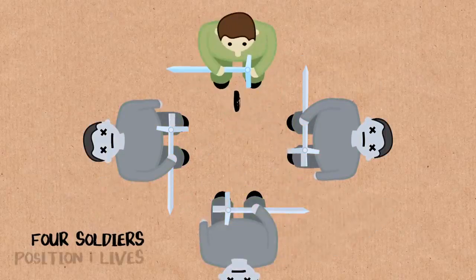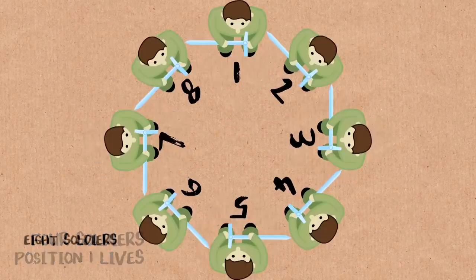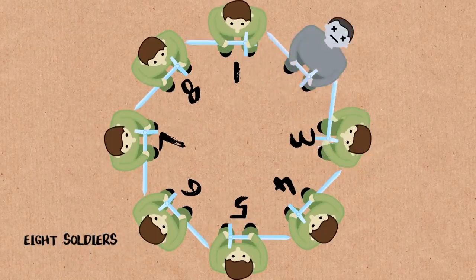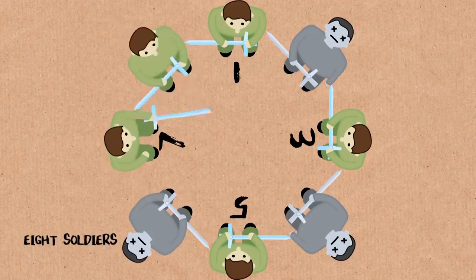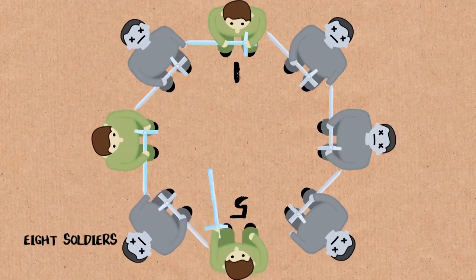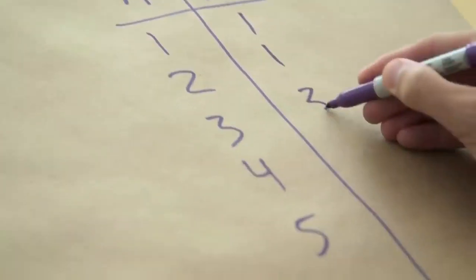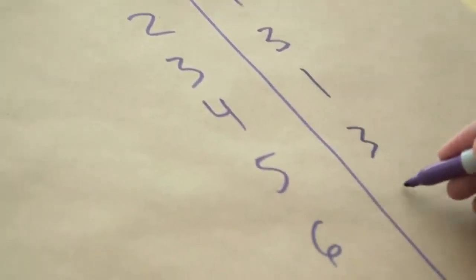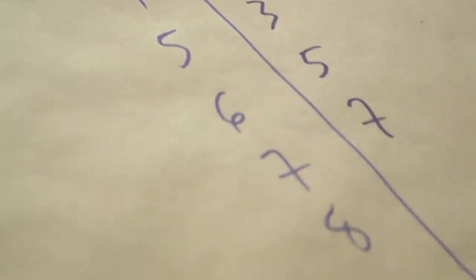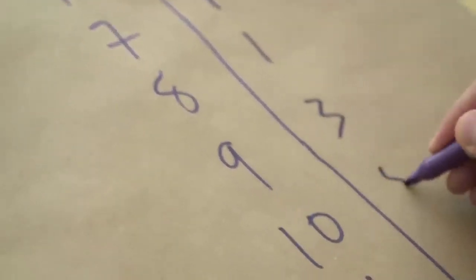If there's eight people, one kills two, three kills four, five kills six, seven kills eight. One kills three, five kills seven, one kills five, winner is one. So it was a one, one, three, one, three, five, seven, one, three, five, seven, nine.